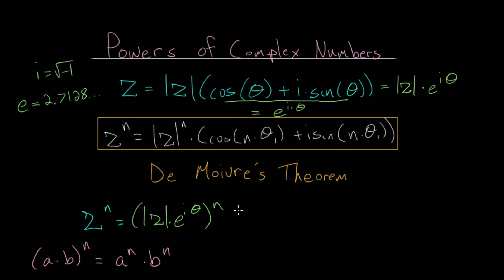Likewise, when we raise an exponent to an exponent, then we end up multiplying the exponents. We have x to the y, and we're raising that to the nth power, meaning that we can rewrite this as x to the y times n.